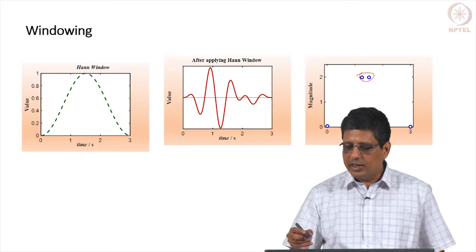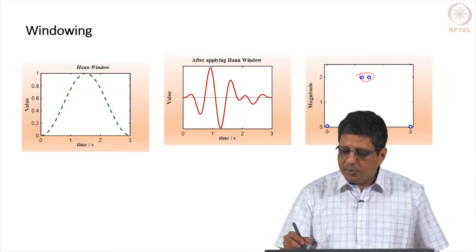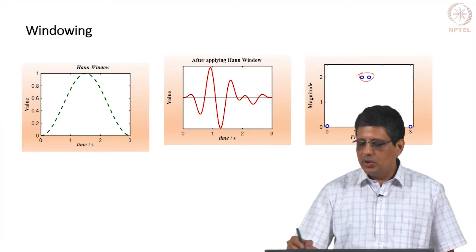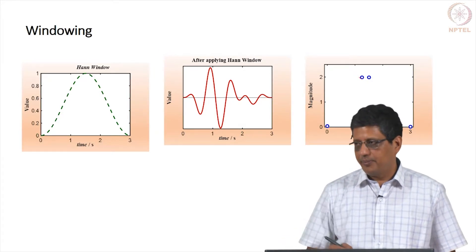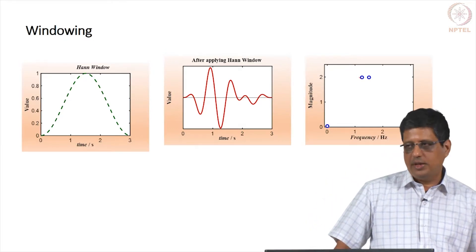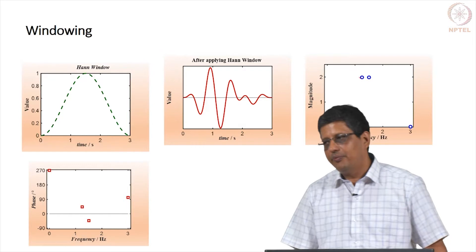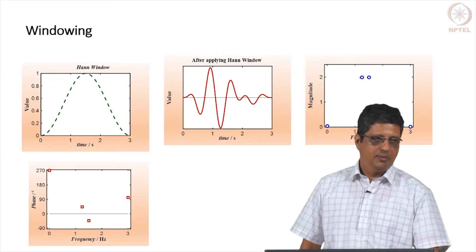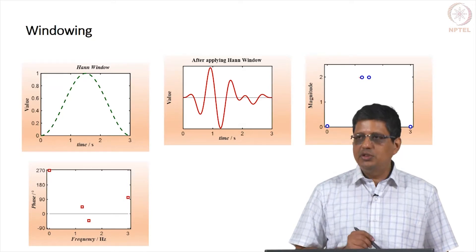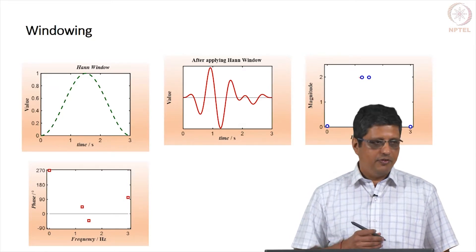More or less correct results. In fact, this is correct result. If you look precisely, it will not be exactly 2, but it will be close enough to that. And you will get more or less 0 here. So magnitude will come correctly if you use proper windowing. Phase will not be correct. There will be an offset. So you will have to account for that and say when I use this windowing, this is what I am going to get. Therefore, I have to correct for the phase.